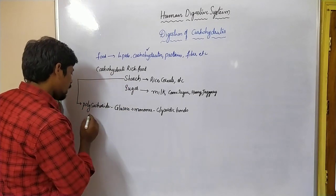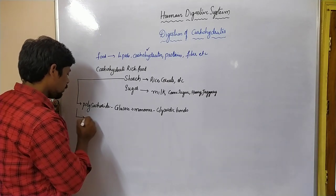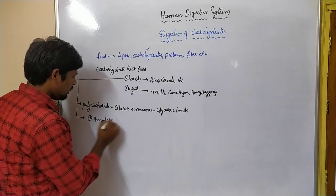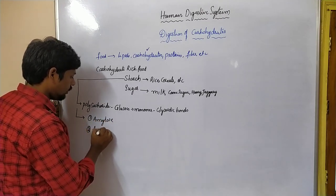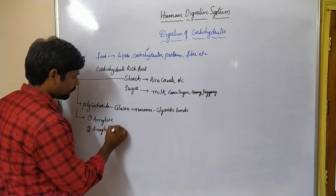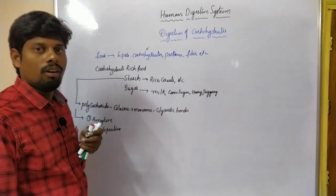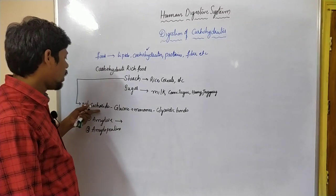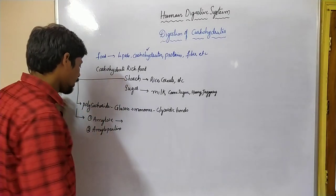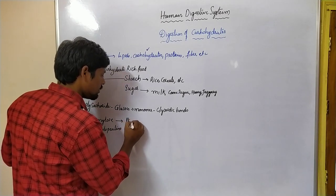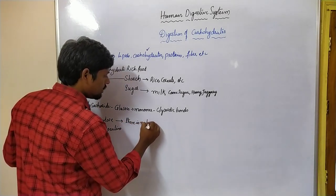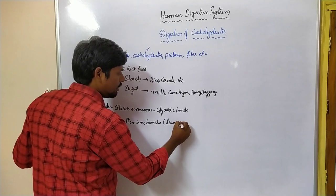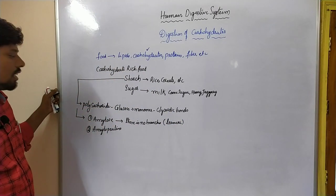Starch is divided into two types: one is amylose, and the second one is amylopectin. Amylose is a polysaccharide — that is, a starch — where there are no branches. It is a linear polysaccharide.